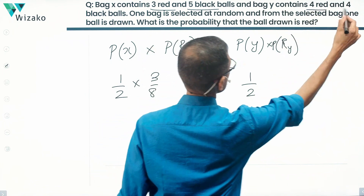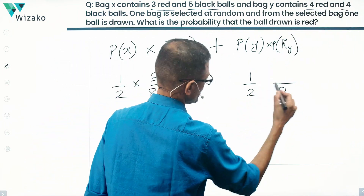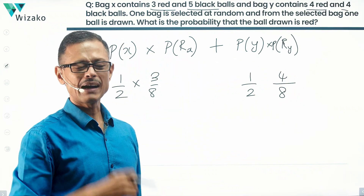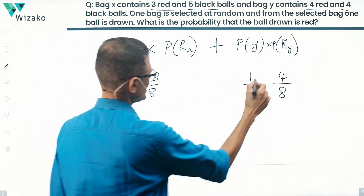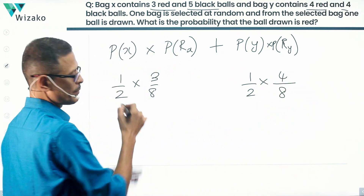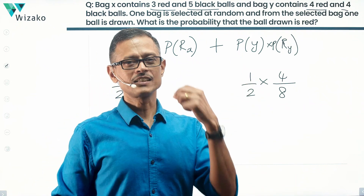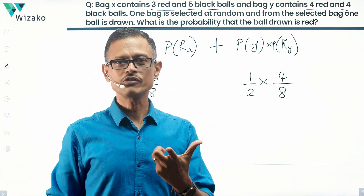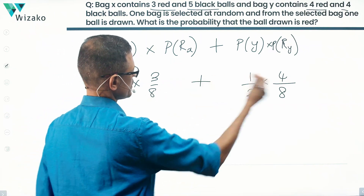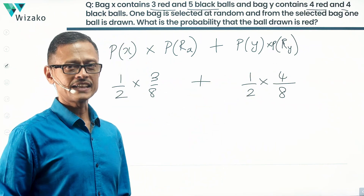For bag Y, there are four red and four black balls, so the total number of balls is 8 and the number of red balls is 4. The probability of getting a red ball out of bag Y is 4 upon 8. So half times 4 upon 8 is the probability of getting a red ball out of bag Y. Summing both terms gives us the overall probability of getting a red ball from one of these two bags selected at random.